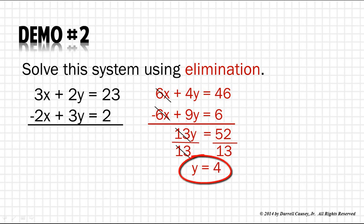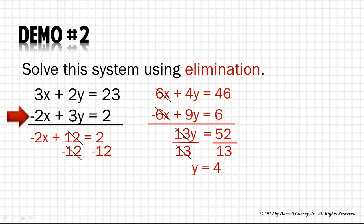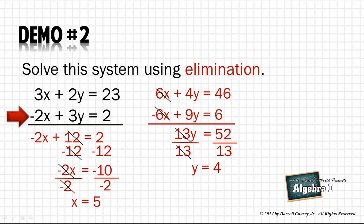Now we know what y is. Let's put 4 into one of the other equations. I'm going to choose the second equation, and I'm going to substitute 4 for y. Let's do the multiplication. We get negative 2x plus 12 equals 2. Minus 12 from both sides, negative 2x equals negative 10. Divide both sides by negative 2, and we get x equals 5. It's just that simple. Let's try another one.